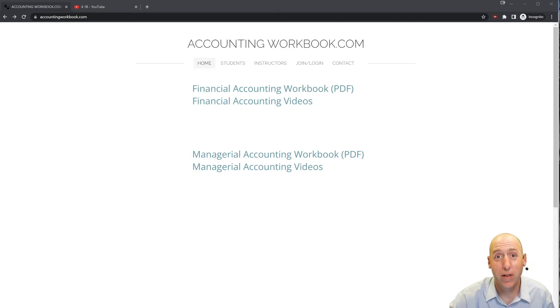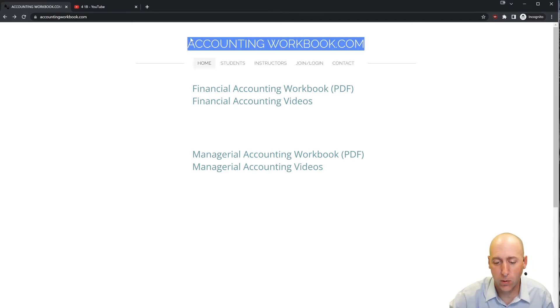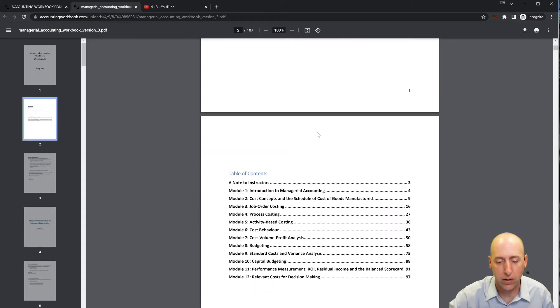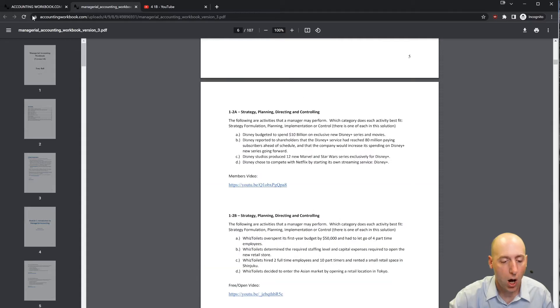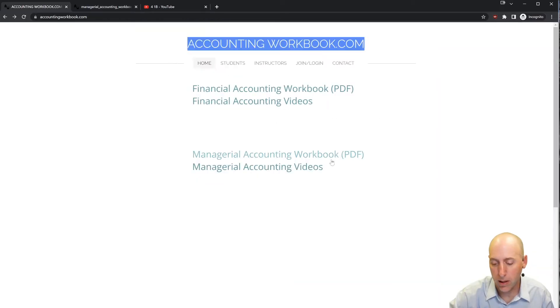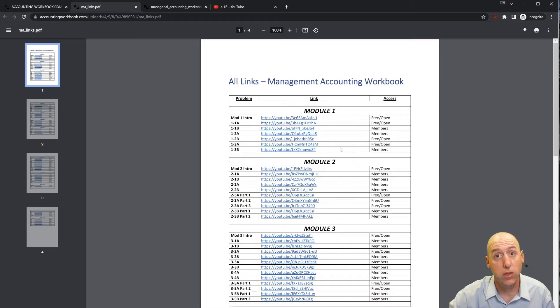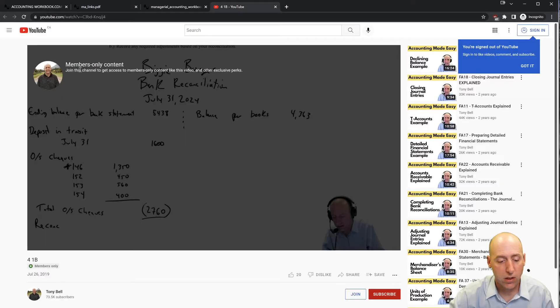All of the problems I work through in my videos can be downloaded from accountingworkbook.com. If you'd like a copy for yourself, just click the PDF link. Also found on the website are links to all of my accounting videos, not just the ones here on YouTube that are publicly listed, but also members only videos. About 40% of my videos are free and open, the other 60% are for members. Okay, let's jump into the problem.